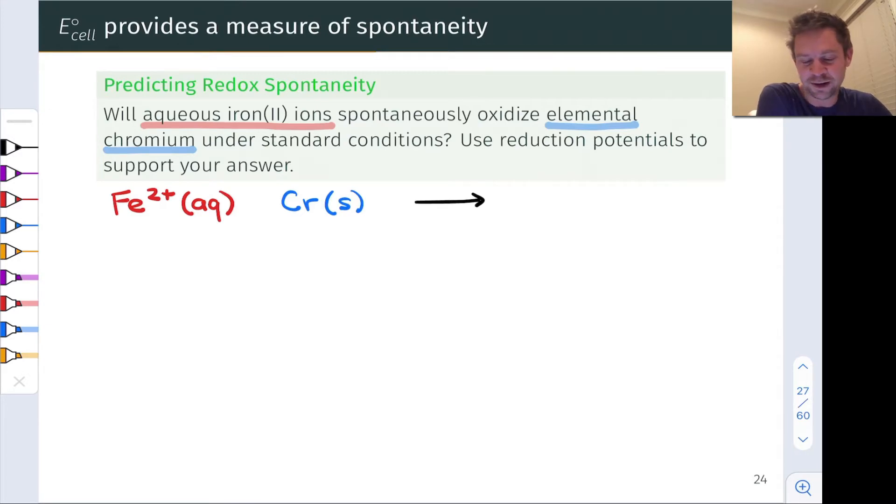What we're going to need to do here is dig into a table of standard reduction potentials and see if we can come up with a combination of two half reactions involving the reduction of Fe²⁺ and the oxidation of Cr⁰ that result in a positive cell potential overall. So it's a fun little exercise exploring a standard reduction potential table.